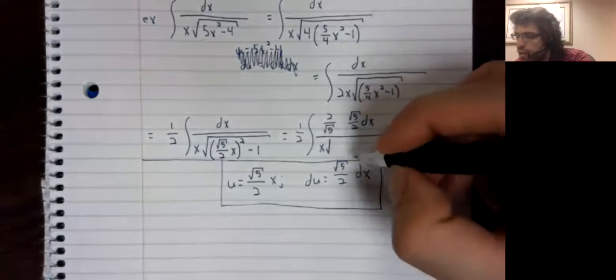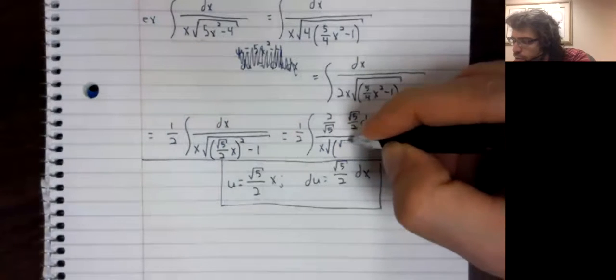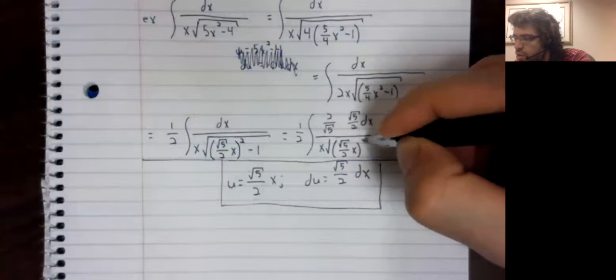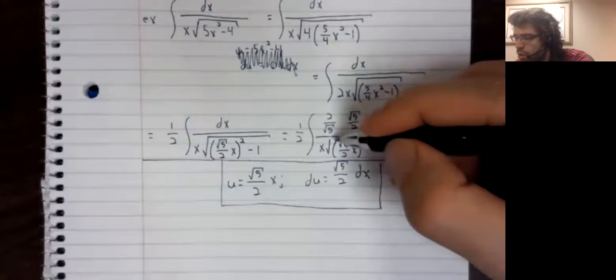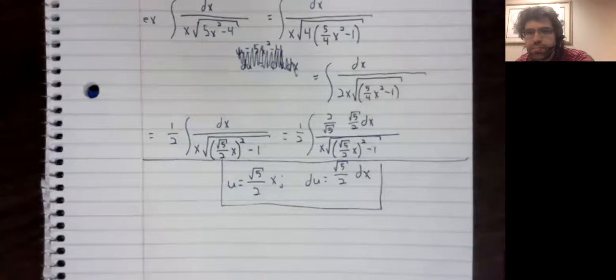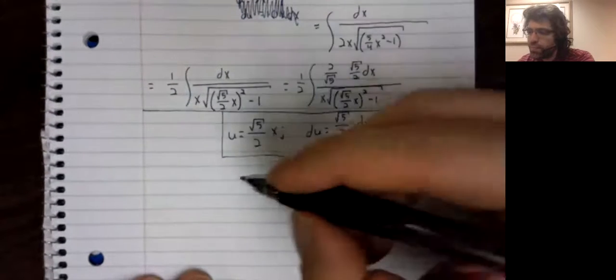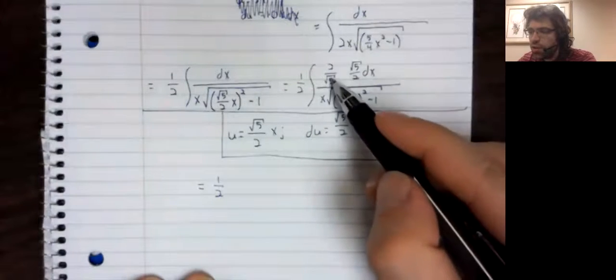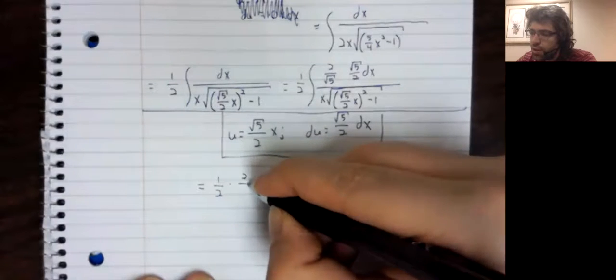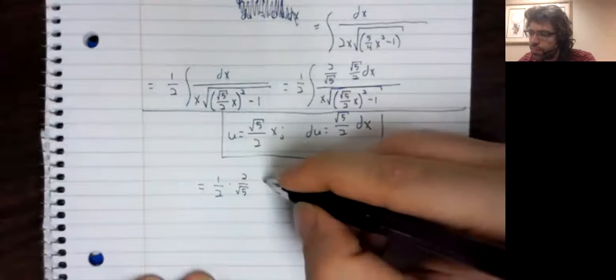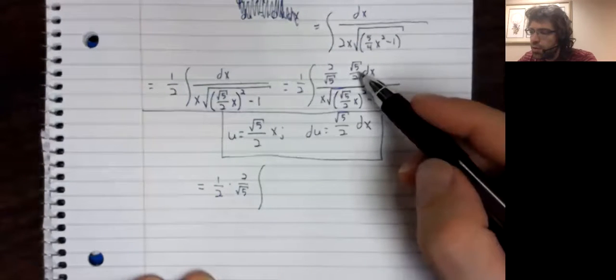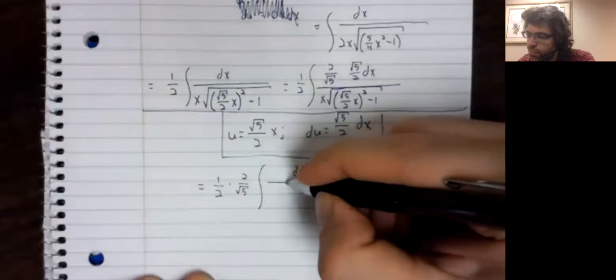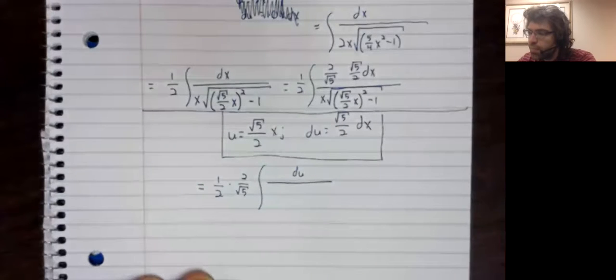And we have the square root of 5 divided by 2x, that entire expression squared, minus 1. This constant comes out. This is a du. Let's see.